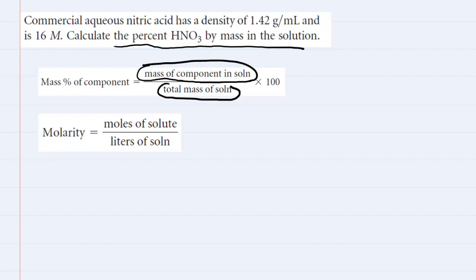What we are given is the density, so we can jot that down, the density of the solution, which equals 1.42 grams per milliliter. And then we are given the molarity of the solution, which is equal to 16 molar. Somehow we have to take all of that information and convert it into a mass percent of HNO3.